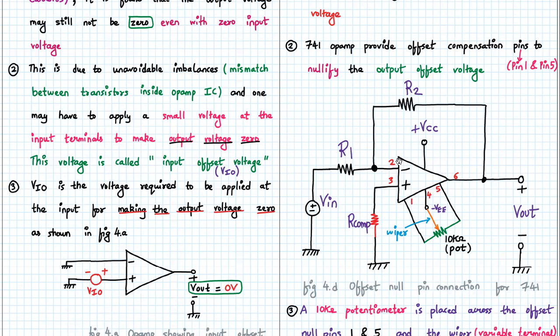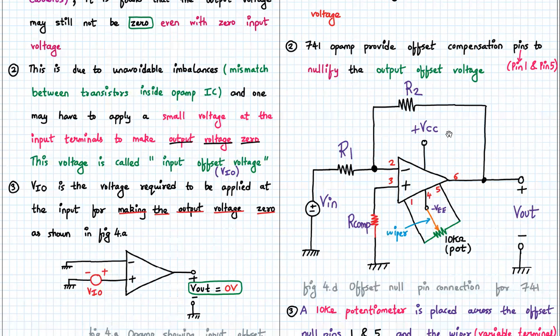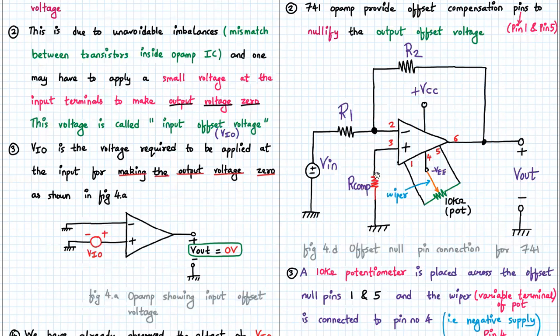The variable terminal of the potentiometer, that is called the wiper, is connected to the negative supply voltage, that is minus VE. So over here we have used almost all the pin numbers of the op-amp. Here it is 7 actually, 2, 3, 1, 4, 5, 6, and 7 is over here. So basically we are providing offset compensation pins to nullify the effect of output offset voltage. Basically, the provision has been made by the 741 manufacturers, IC manufacturers, to manually make the output voltage go to 0 with 0 input voltage.